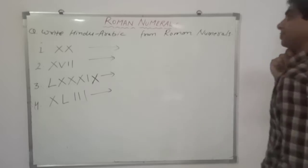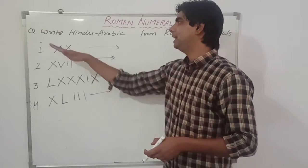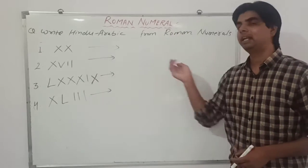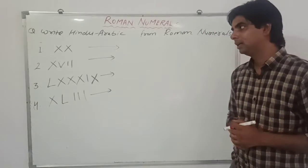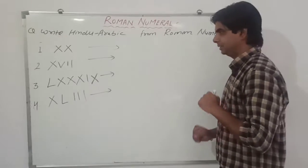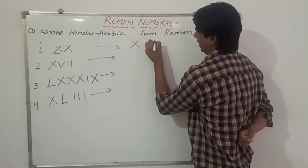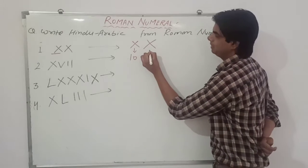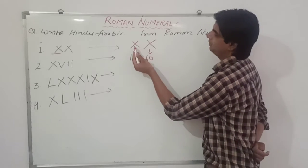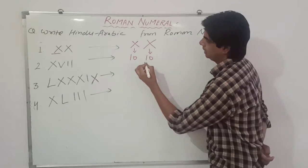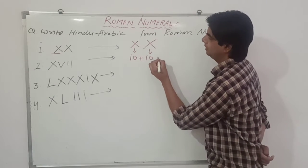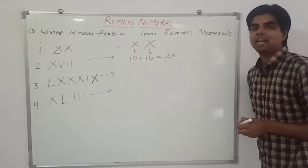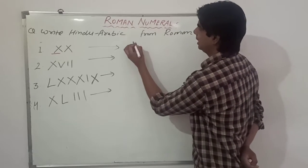Now let's take the second type of example. Here Roman numerals are given and we have to write Hindu Arabic numbers. First, XX — X means 10 and this X also means 10. When we write two symbols together they get added. So XX is 10 plus 10 equals 20.